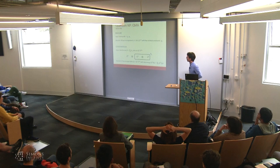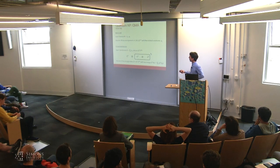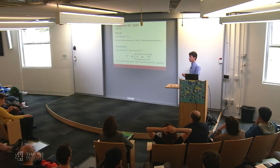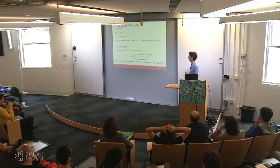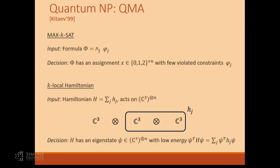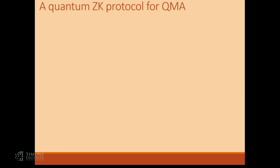The k would be the number of particles each constraint acts on. This h needs to have a decomposition as a sum of local constraints — just as in the classical case. Then each local constraint acts on a certain subset of particles; k would be 2 in that example. The picture I wanted to give is that what we're trying to determine now is very much analogous to the three-coloring case: does there exist a quantum state — an assignment — that satisfies the quantum constraints?